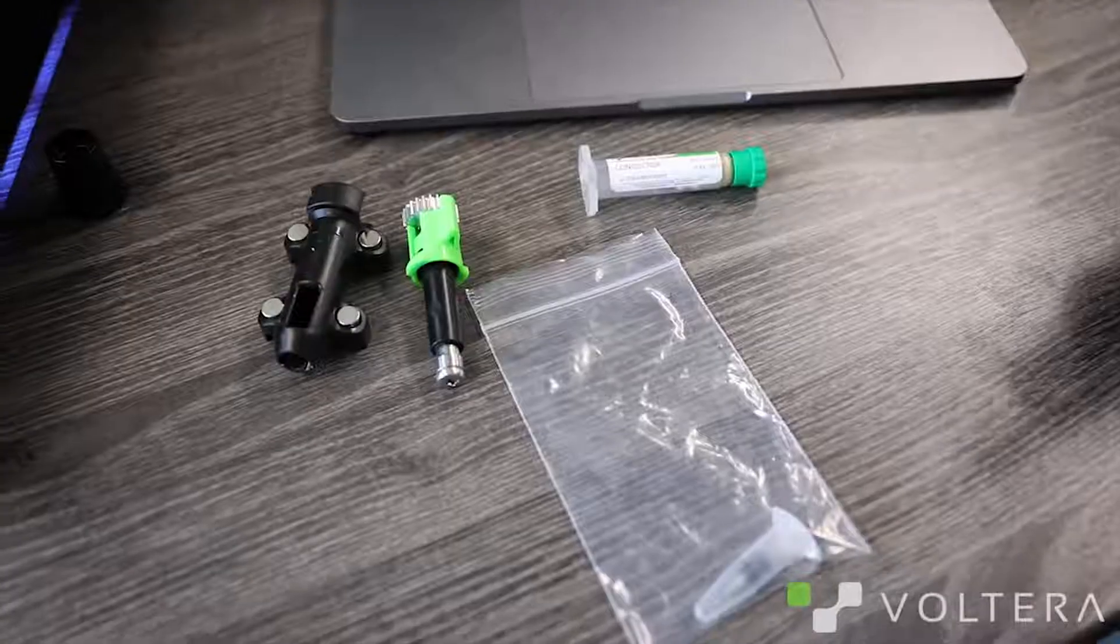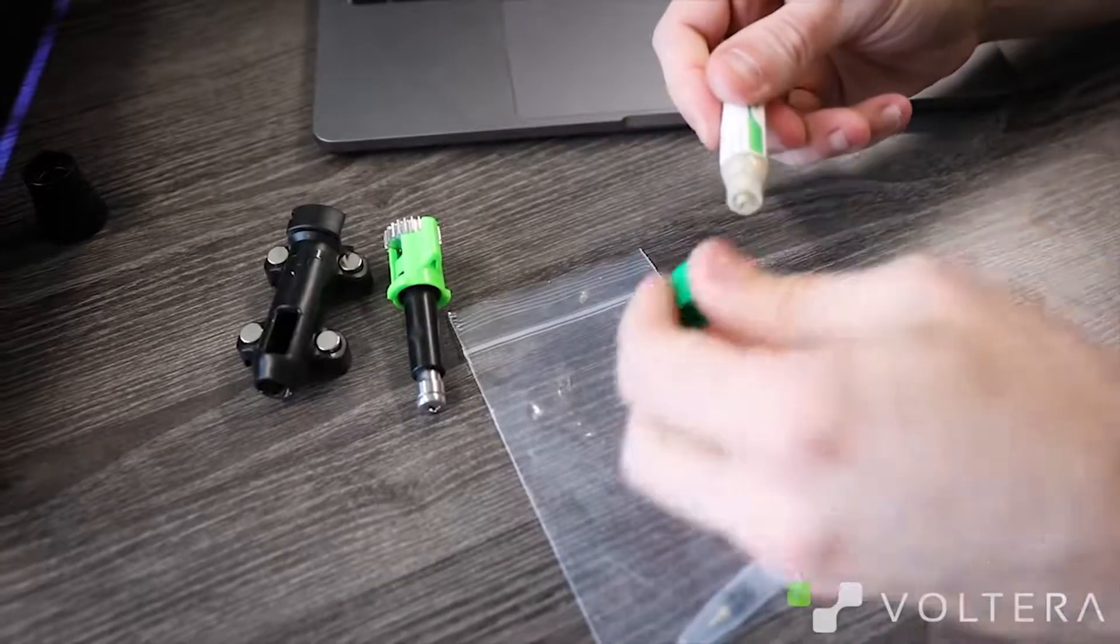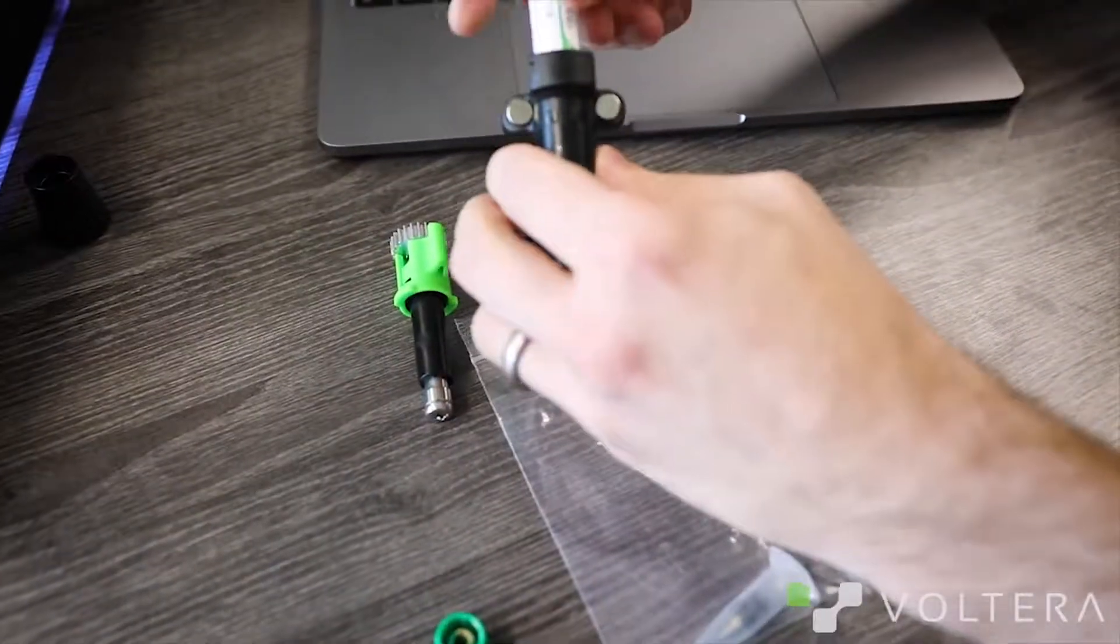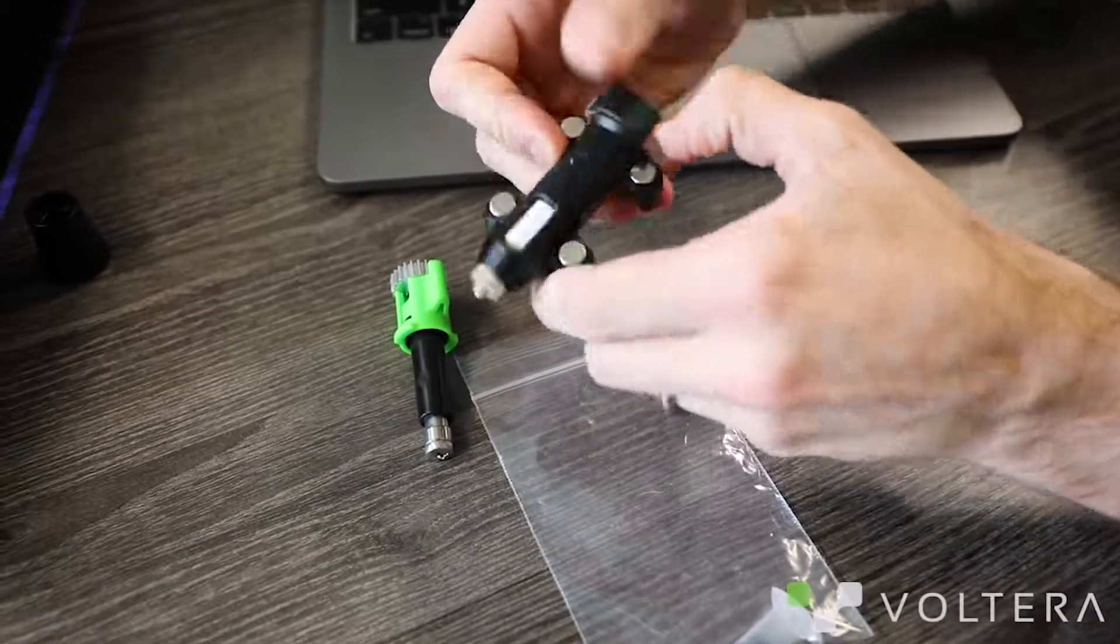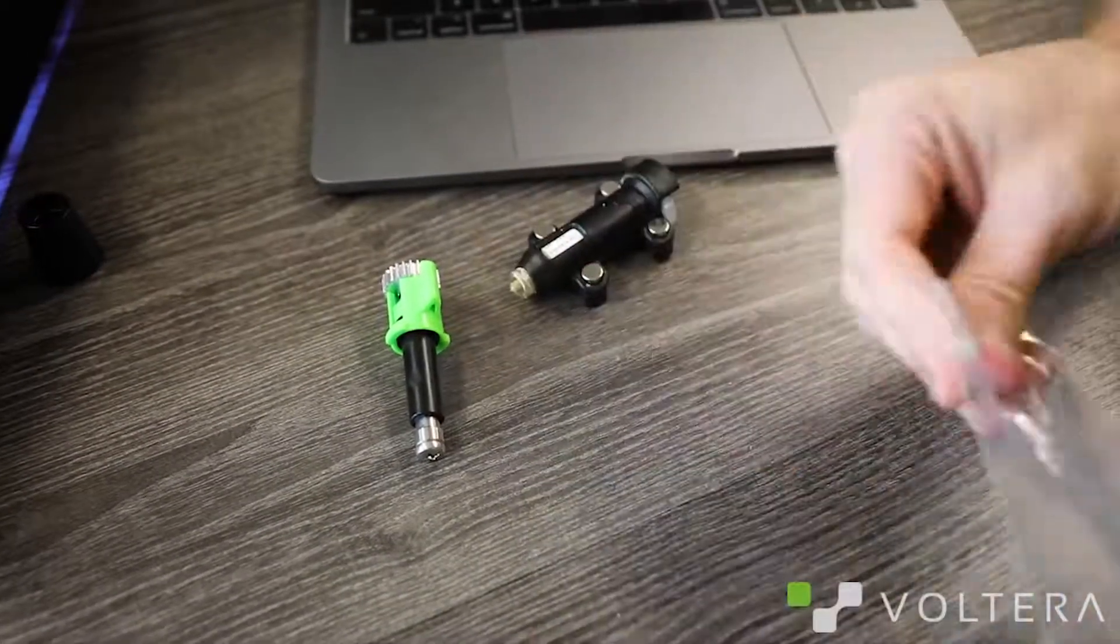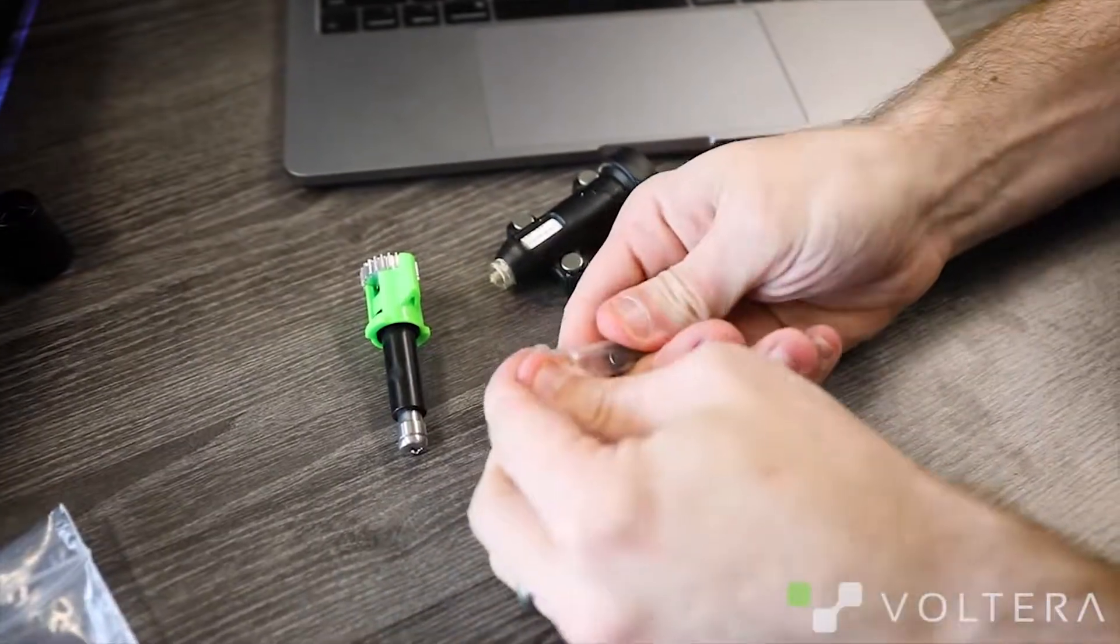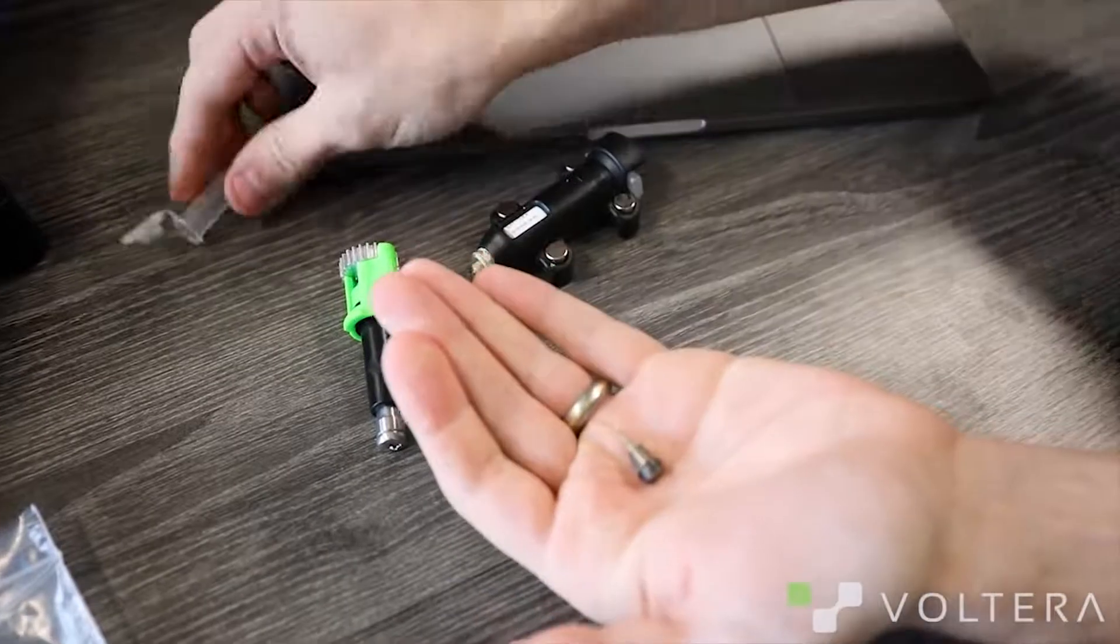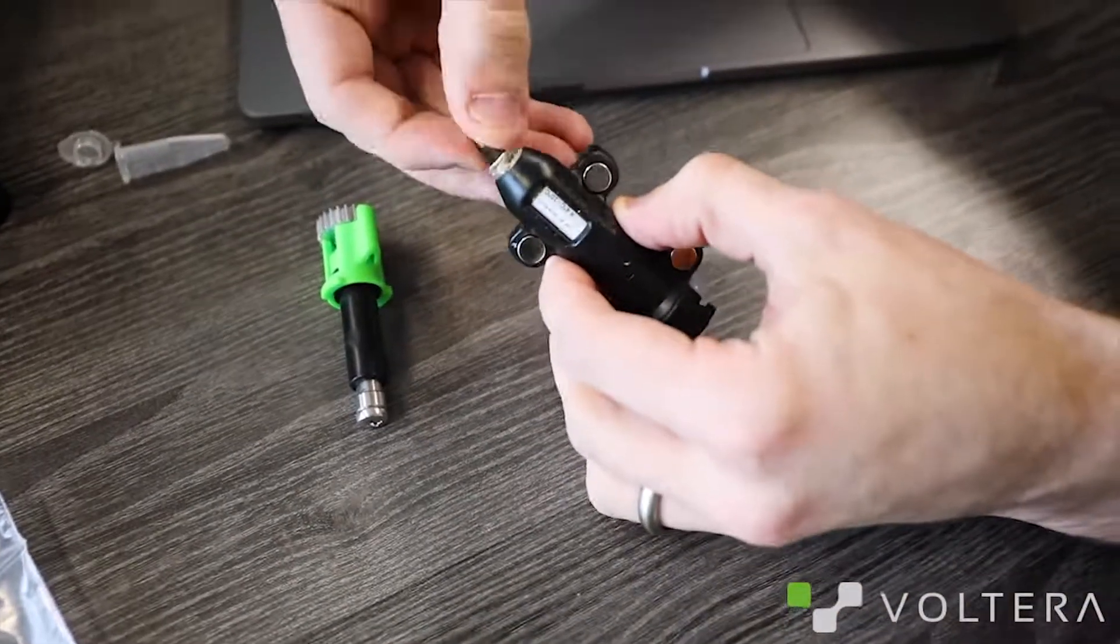Next, we're going to get our ink ready to dispense. So now I'm going to uncap the ink and put it into the dispenser. Now, I'm going to grab a nozzle. Screw it onto the end here. Like that.